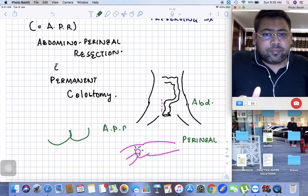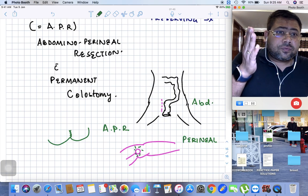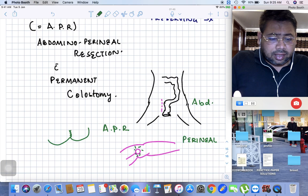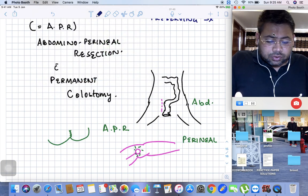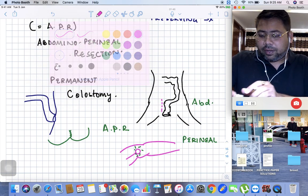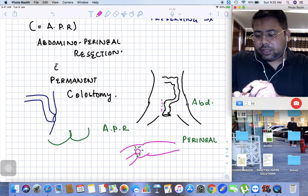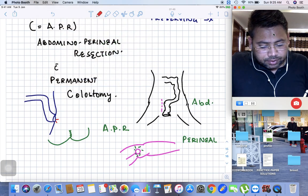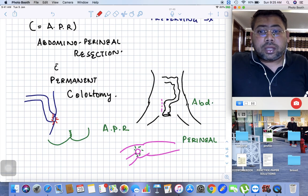The question is, how will the stool pass out when you've closed the anal opening? For that reason, you make a permanent colostomy over the body. This is the basic concept of APR with colostomy.